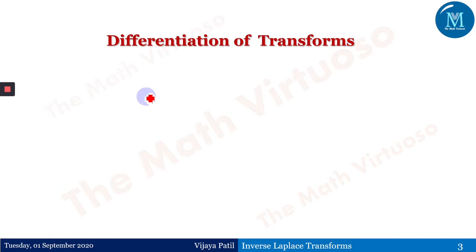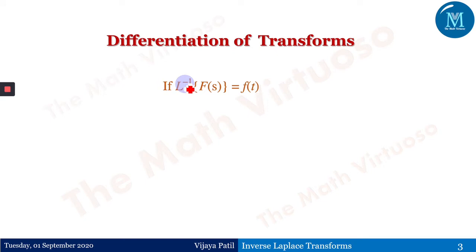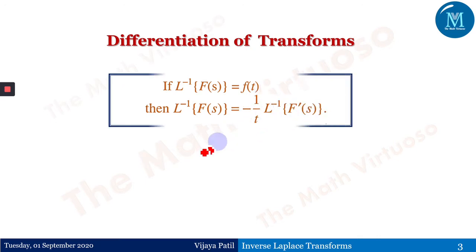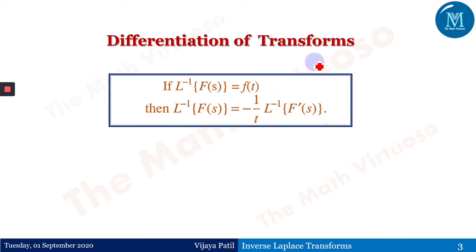What exactly is the statement of differentiation of transforms? It goes as: if the inverse Laplace of F(s) is f(t), then the inverse Laplace of F(s) equals minus 1 over t times the inverse Laplace of F'(s). This is the statement for differentiation of transforms of ILT.